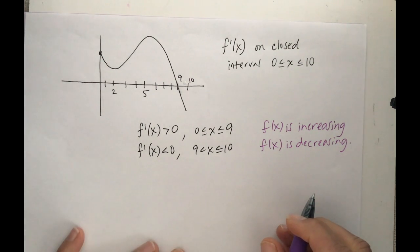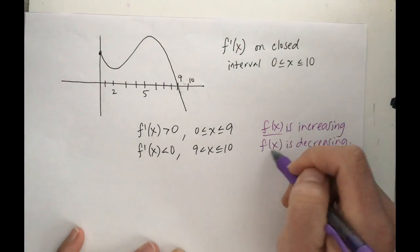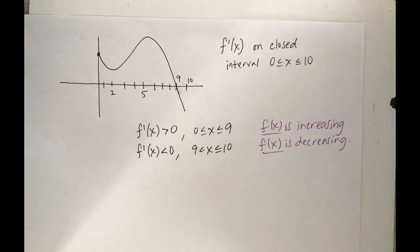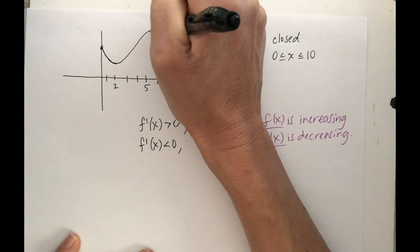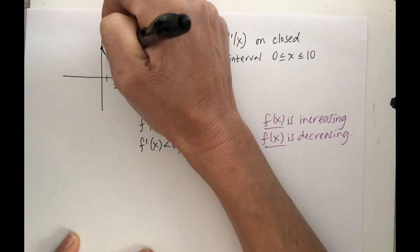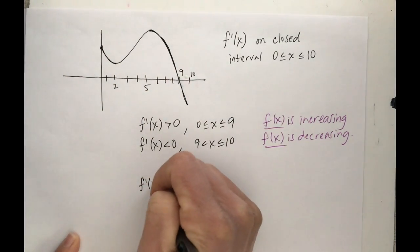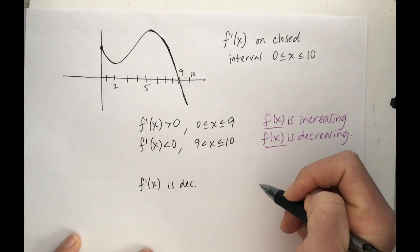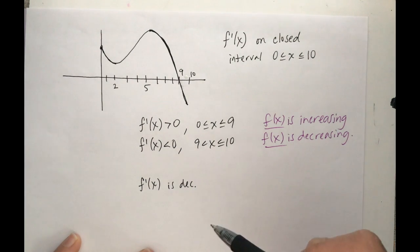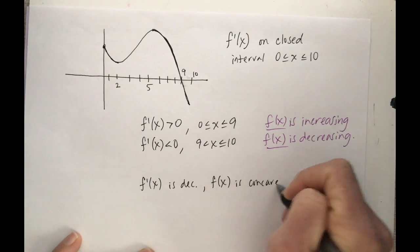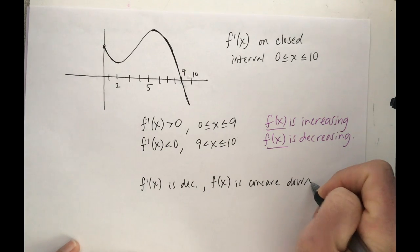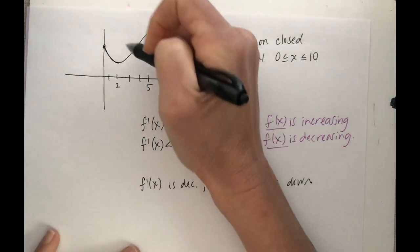Okay, awesome. So this is the derivative. This is going to tell me how f(x) is behaving. The derivative tells me how f(x) is behaving. Now let's talk about that derivative. f'(x) is decreasing from 0 to 2 and f'(x) is decreasing from, let's call this, 5 to 10. So f'(x) is decreasing. That means my consecutive slopes of tangent lines are going down. They are decreasing. And if my consecutive slopes are decreasing, that means f(x) is concave down. Boom.